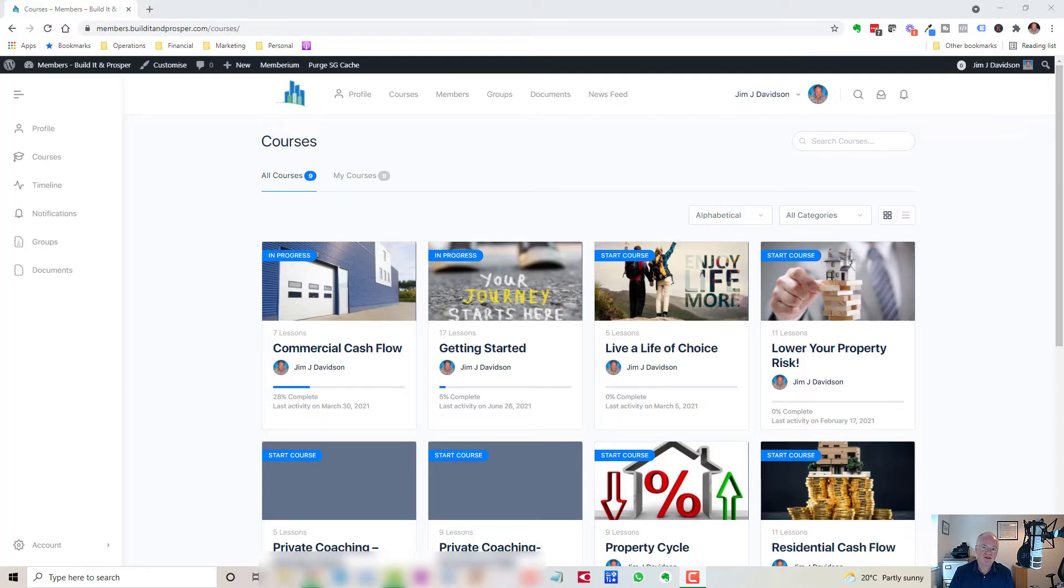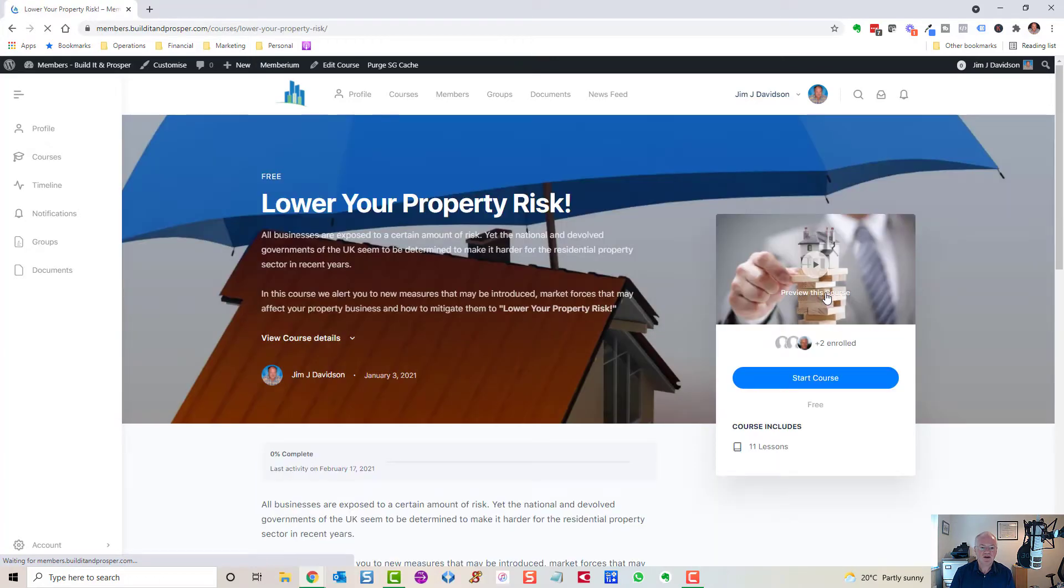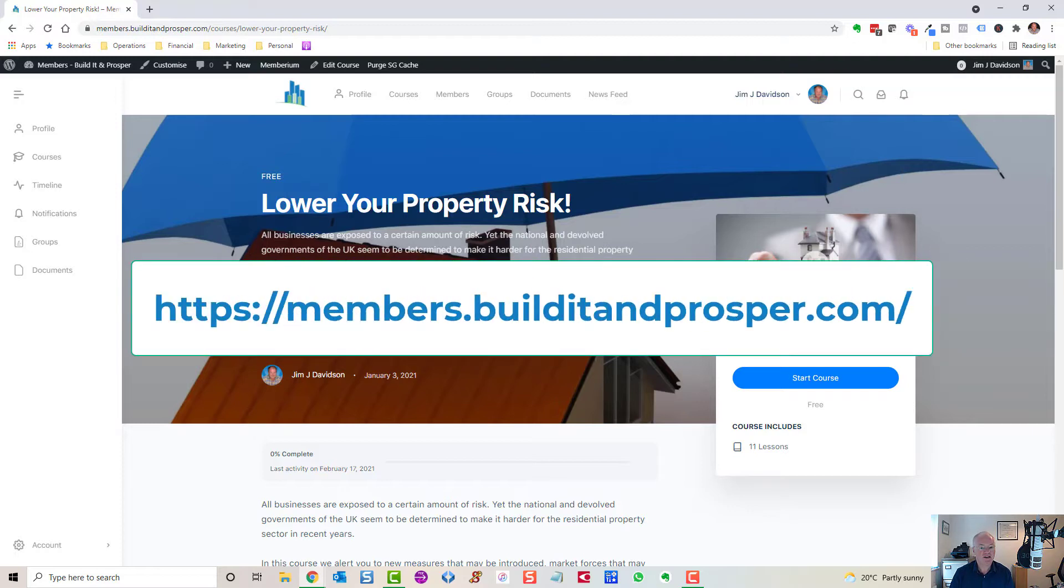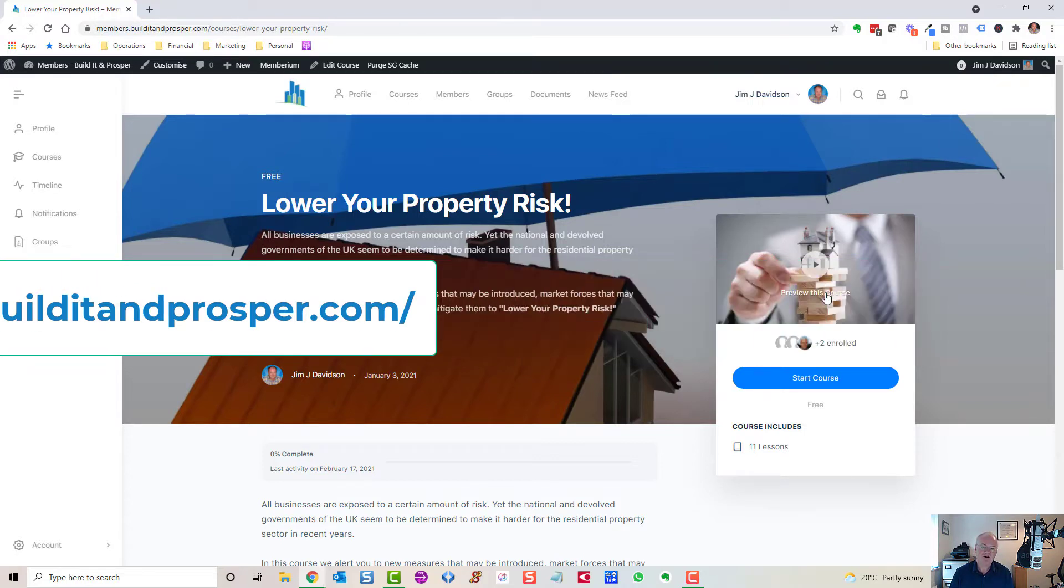So what I'm going to do is take a couple of lessons from our membership community under the Lower Your Property Risk course. I think it's valuable, but if you want to follow on from this, just go to our membership community, which is incidentally free to join and review the other lessons. There's 11 lessons in total in this course, and I'm going to present the first two lessons now. So I hope you enjoy.